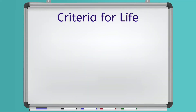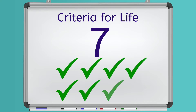To begin with, we said that we're going to use seven criteria to determine if something is alive. It's important to note here that something has to meet all seven of those criteria to be considered alive — not just one, not even six out of seven, but all of them.